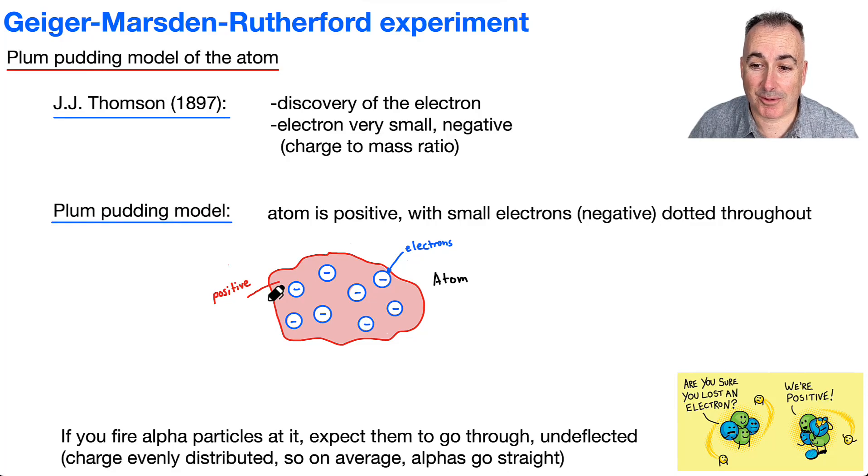Are you sure you lost an electron? We're positive. We're going to talk about the Geiger-Marsden-Rutherford experiment. It's often just called Rutherford. We'll talk about Rutherford scattering.